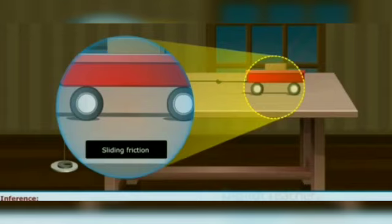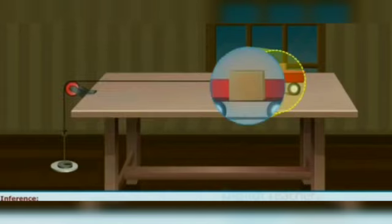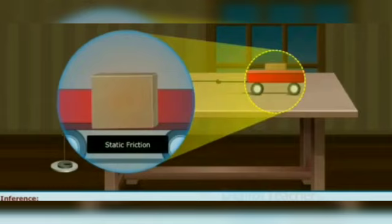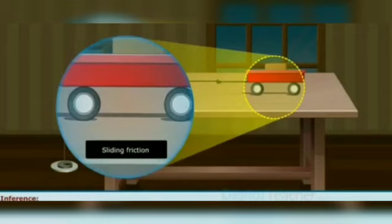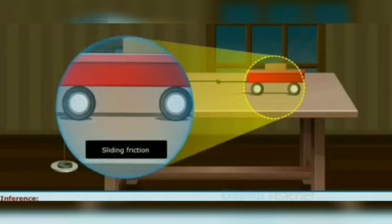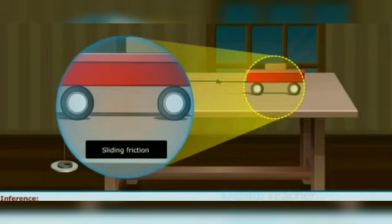So, when two objects are not moving relative to each other, the force that opposes or resists the lateral movement of objects is called static friction. The trolley moves with respect to the surface of the table — the friction that exists here is sliding friction.